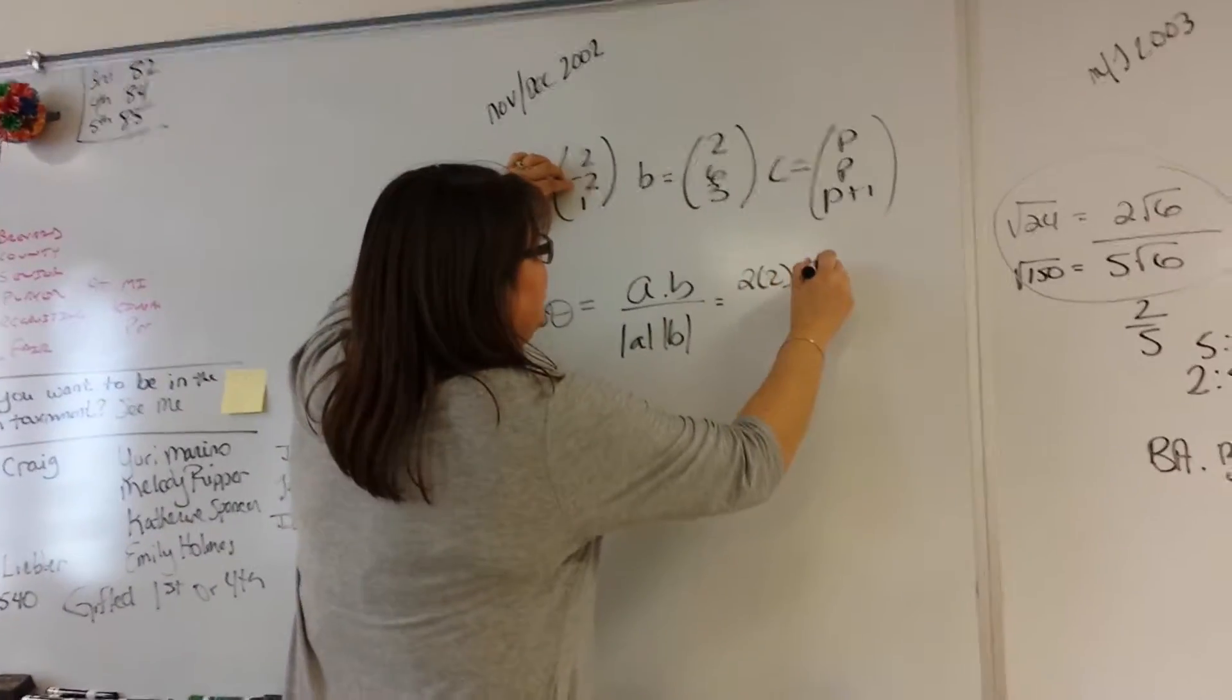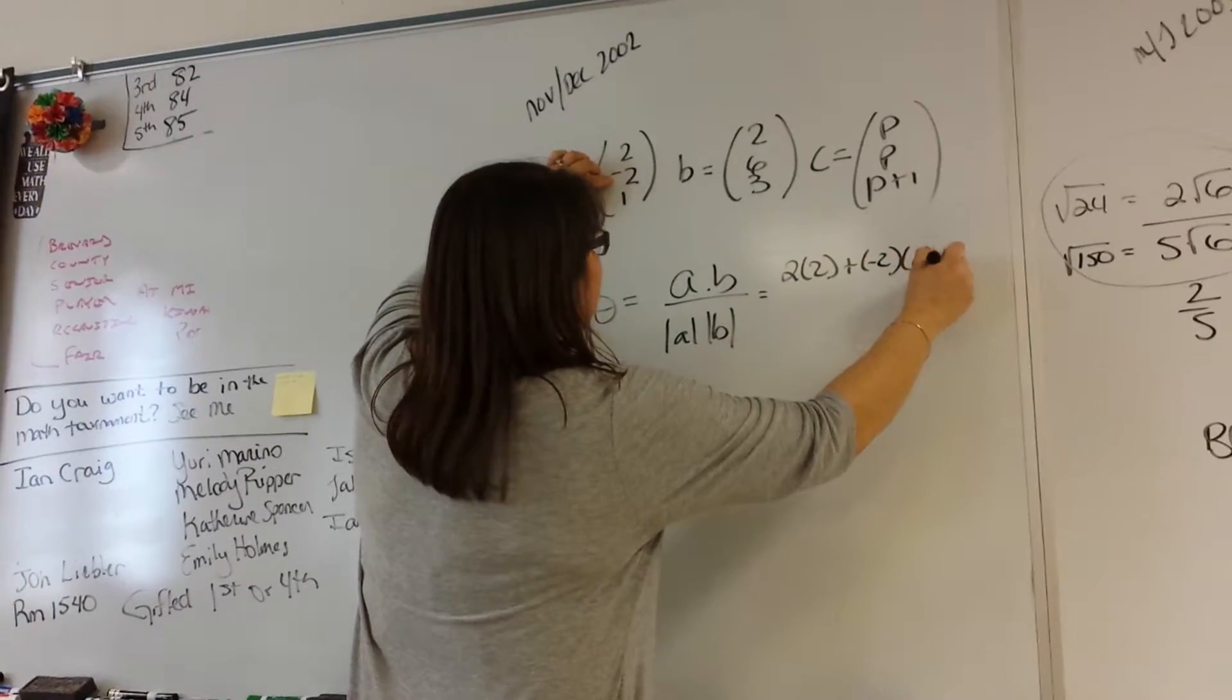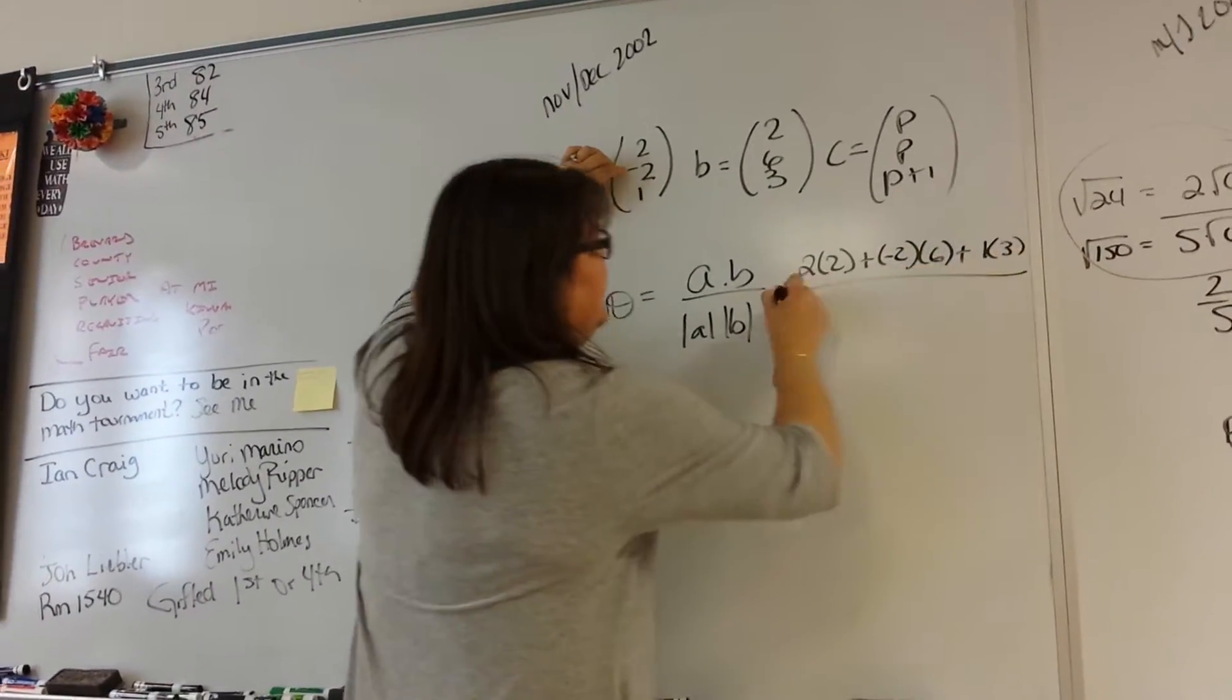2 times 2 plus negative 2 times 6 plus 1 times 3 over.